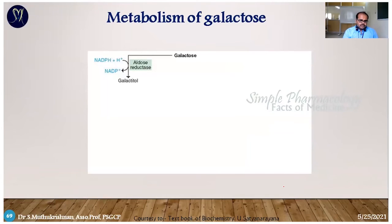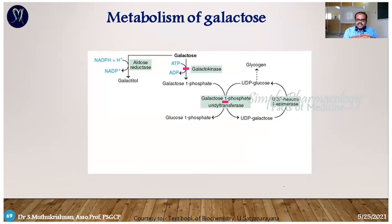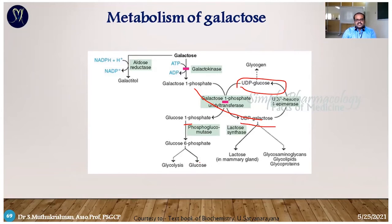Next is galactose metabolism. Galactose is converted to galactitol by aldose reductase enzyme. With galactokinase, galactose is converted to galactose-1-phosphate. UDP glucose transferase transfers the UDP molecule, converting galactose to UDP galactose. Glucose is donated as glucose-1-phosphate. UDP galactose is responsible for formation of UDP glucose. Glucose-1-phosphate is converted to glucose-6-phosphate and enters glycolysis. Parallelly, UDP galactose can form lactose and glycosamines. UDP glucose is responsible for glycolipids and glycoproteins.